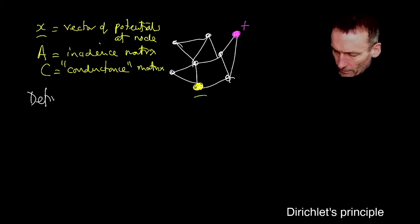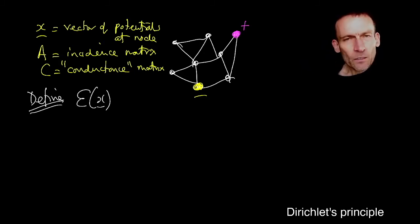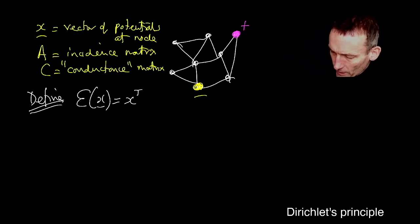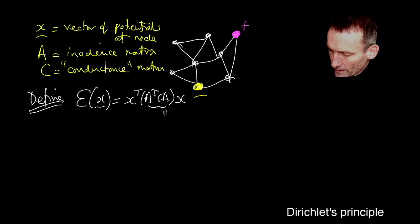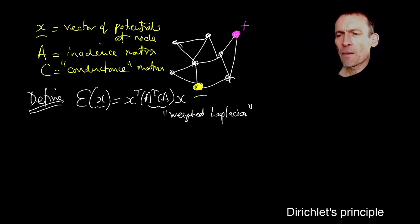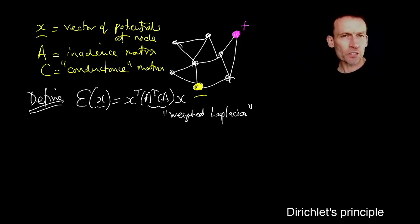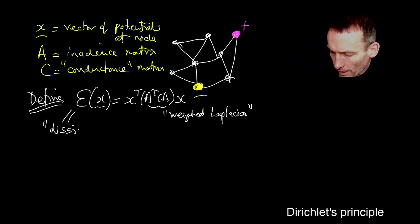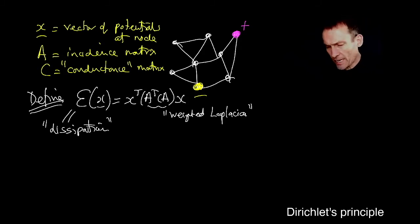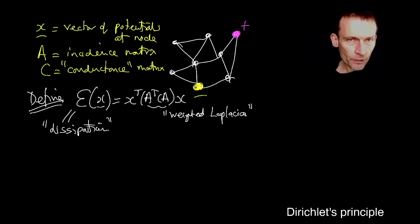I can define, without saying anything else, this quantity — it's a scalar function of the potentials of the nodes. A scalar function of x, and it's going to be x transpose A transpose CA x. We know what that is: this is the weighted Laplacian. I can define that — that's a scalar quantity. If I've got A, C, and x, I can just write it down. You give me a graph, I've got A and C, and I can define any set of node potentials and calculate this scalar function epsilon — capital E — and I'm going to call this a dissipation. It's clearly just a quadratic function of the node potentials.